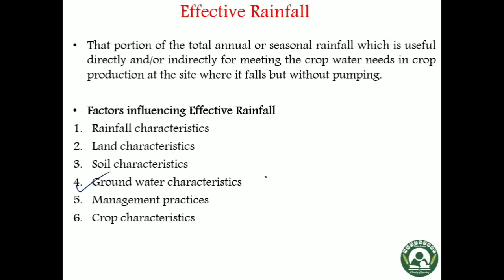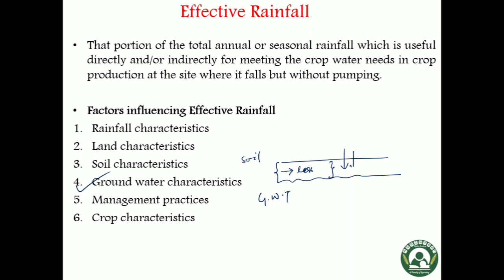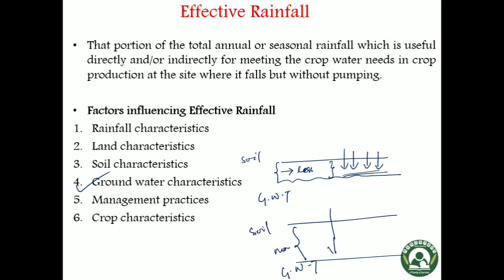Coming to ground water characteristics, if the ground water table is shallow — meaning the gap between the surface soil and the top of the ground water table is very small — then it is called a shallow ground water table. In that case, this gap is very less, hence less amount of rainfall water can be stored here. So if a shallow ground water table is there, there is more ineffective rainfall and very less effective rainfall.